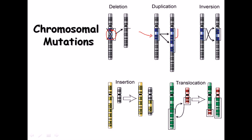Inversion means that a chromosomal region — say region A and region B — gets flipped, so B ends up on top and A on the bottom. As a result, the genetic expression and genetic makeup can be changed.